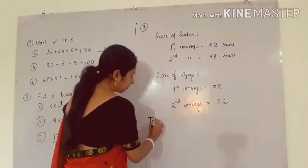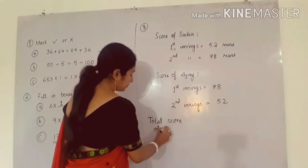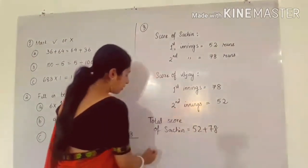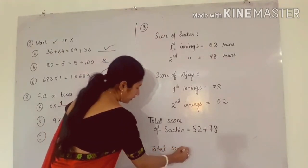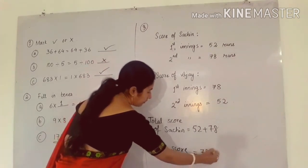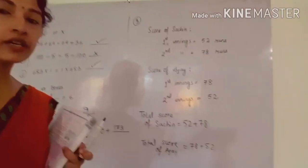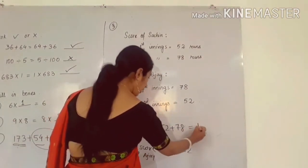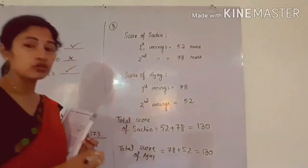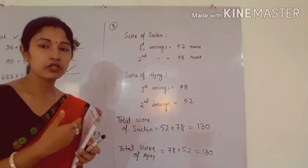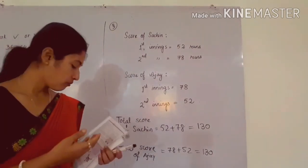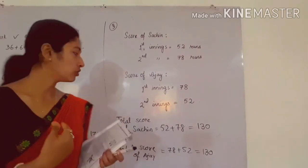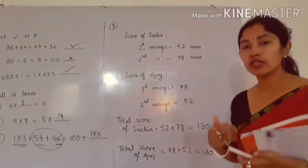You have to write: total score of Sachin — then add the runs of two innings: 52 runs plus 78 runs. Again, write total score of Ajay — then add 78 and 52. The order is different, but the numbers are same. When you add, you will get the same answer. Here you will get 130, and here also you will get 130. We can say that commutative property of addition is in place. As both the scores are same, both Sachin and Ajay scored the same number, that is 130.